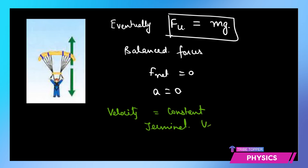Terminal velocity basically refers to the constant velocity gained by any falling object when its downward force — that is its weight — becomes equal to the upward force, which is air resistance.